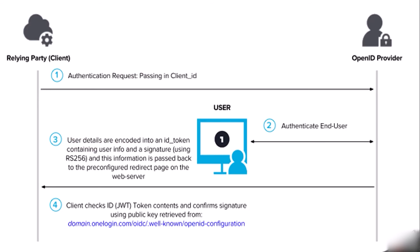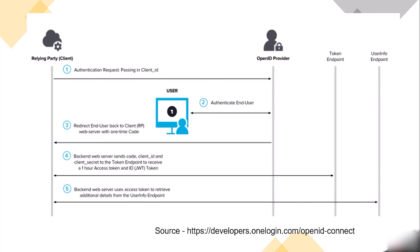Looking at the flow diagram — the relying party client sends a first authentication request by passing in the client ID. In the second step, the OpenID provider authenticates the user. In the third step, user details are encoded into an ID token containing user info and a signature using RS256, which is passed back to the pre-configured redirect page on the web server. Finally, the client checks the ID JWT token and confirms the signature using the public key retrieved from the authenticated domain. The source of this diagram is developers.onelogin.com/openid-connect.